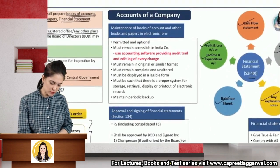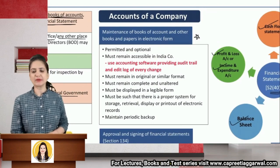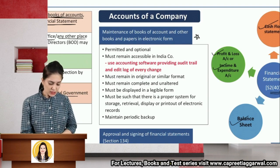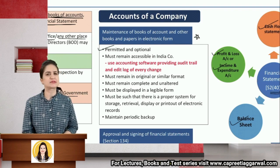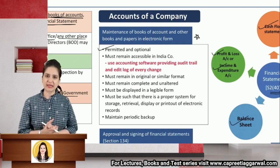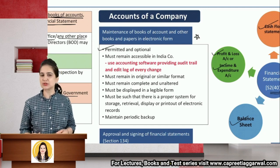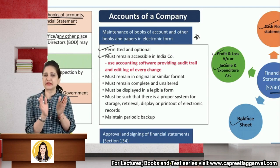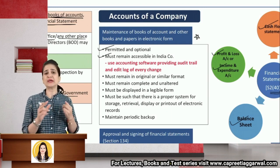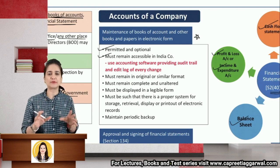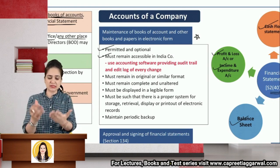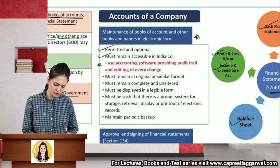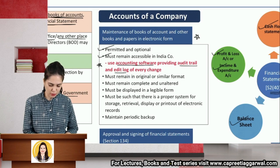Maintenance of books of accounts in electronic form: this is important because of the amendment. We can now maintain books and records in either physical form or electronic form. Electronic form is optional and permitted — it is not yet compulsory. These records should remain accessible in India; servers should be maintained in India. The records maintained should be in a legible form — the output should be in the same or similar format as the input data.